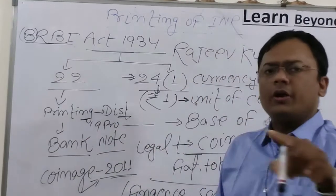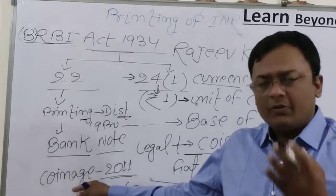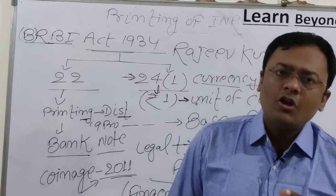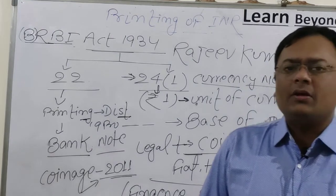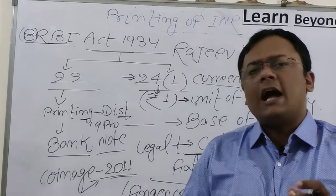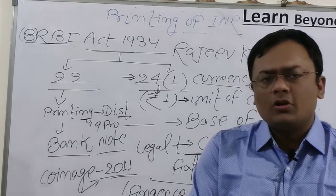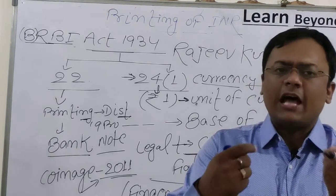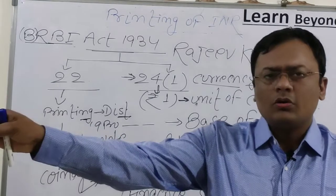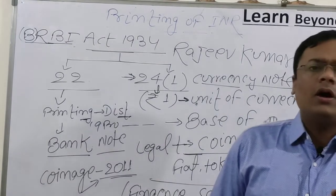This 'I promise to pay the bearer' comes from the Coinage Act of 1940, amended in 2011. However, on the one rupee note, 'I promise to pay the bearer sum of rupees one' is NOT written. The reason is that RBI does not print it — Government of India is the whole and sole authority for printing the one rupee note. Since it is issued directly by the government and not through RBI, the promissory statement is not on it.